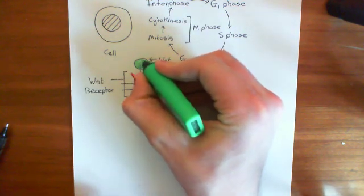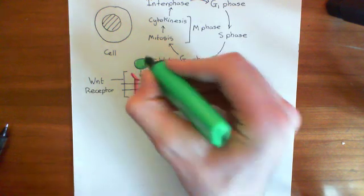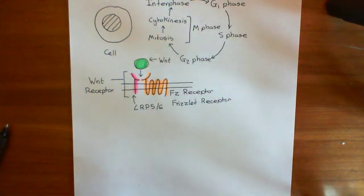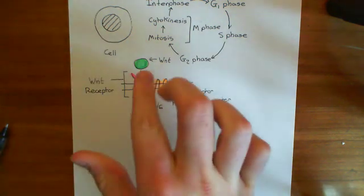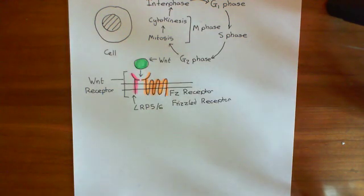What does this cause? Why does this lead to the promotion of the cell actually going to divide? Why does Wnt signaling lead to the cell dividing?